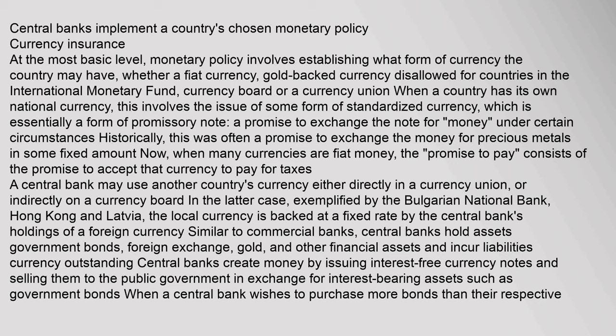Central banks implement a country's chosen monetary policy. At the most basic level, monetary policy involves establishing what form of currency the country may have — whether a fiat currency, gold-backed currency (disallowed for countries in the International Monetary Fund), currency board, or a currency union. When a country has its own national currency, this involves the issue of some form of standardized currency, which is essentially a form of promissory note — a promise to exchange the note for money under certain circumstances. Historically, this was often a promise to exchange the money for precious metals in some fixed amount. Now, when many currencies are fiat money, the promise to pay consists of the promise to accept that currency to pay for taxes.